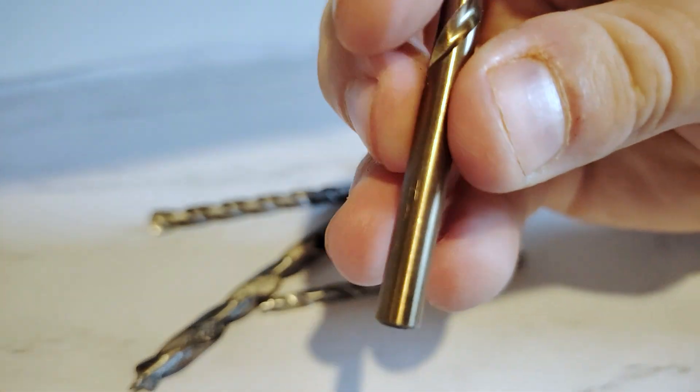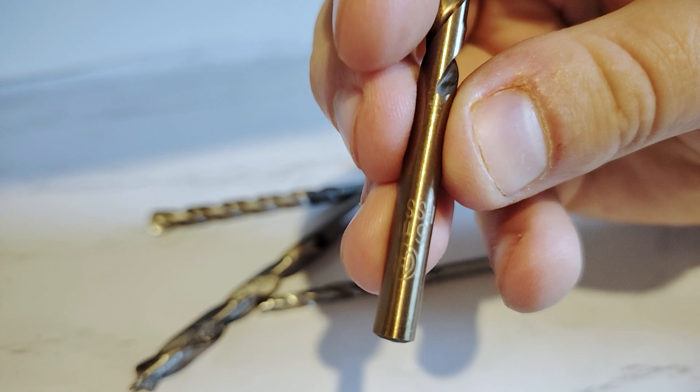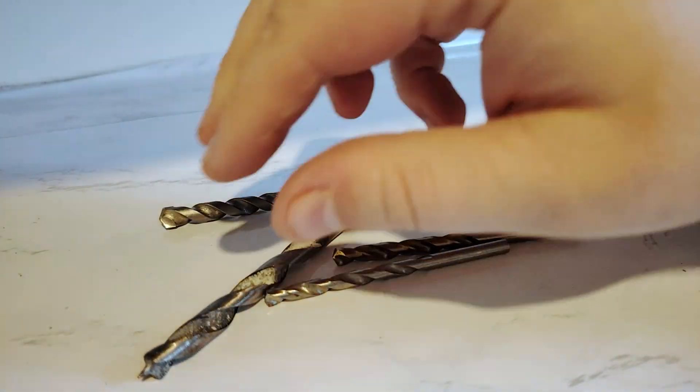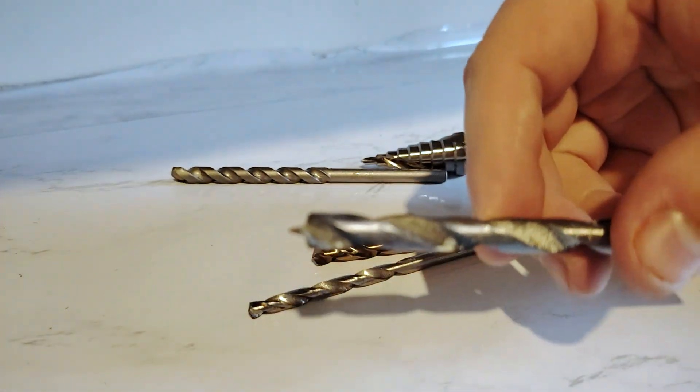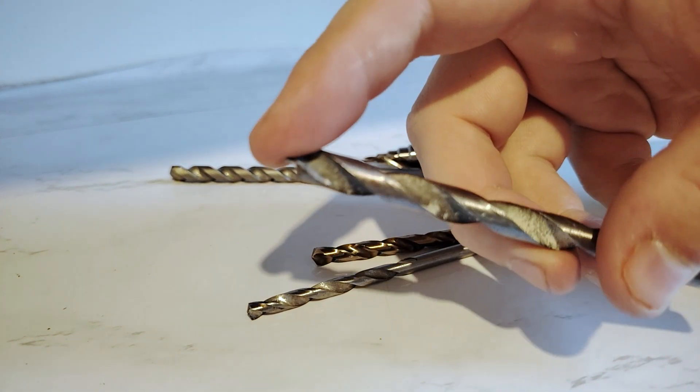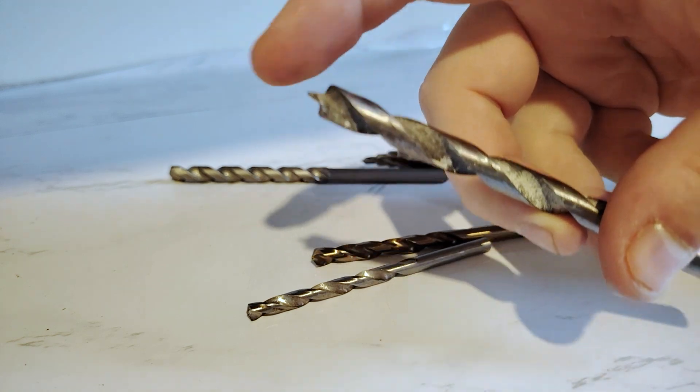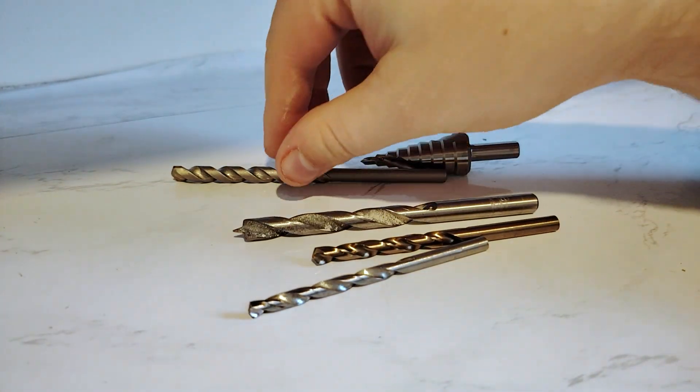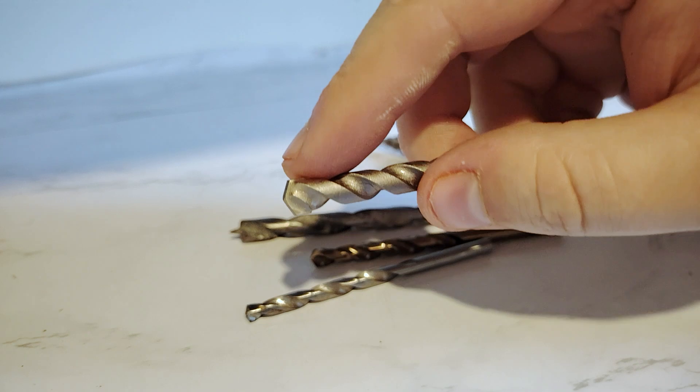And you also quite often want to look for HSS on the shaft. Now this one here is a wood drill bit. Easy to tell it's wood because it's got this sharp point on the end. If you try drilling into metal with that, this point would just melt and disappear.